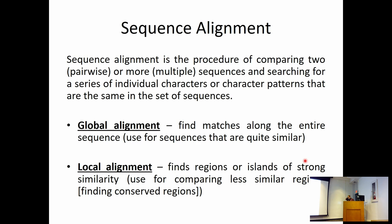That brings us to the first bioinformatic topic we want to talk about: sequence alignment. We've kind of skirted around this - we've mentioned Google and how representing sequences as strings allows you to do Google-like searches. But Google is actually a smart algorithm. If I search for 'bicycle,' it's smart enough to find searches containing 'bike' as well. So you'd expect that a computer can be smart enough to find chemically similar sequences in addition to ones that just match letters.